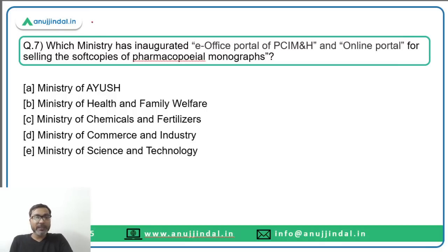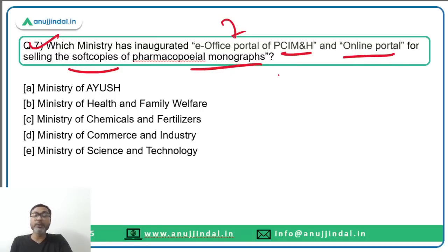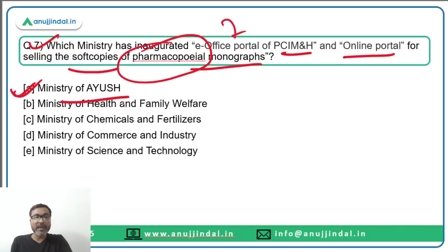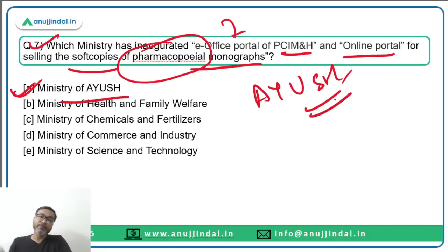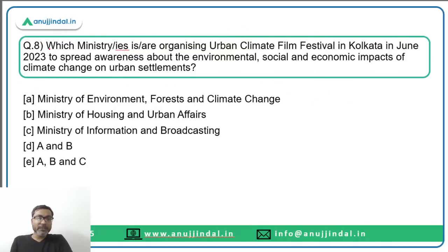Question number seven: The Ministry of Ayush inaugurated the e-office portal of PCI M&H — an online portal for selling soft copies of pharmacopoeial monographs. AYUSH stands for Ayurveda, Yoga, Unani, Siddha, and Homeopathy. Option A is the correct answer.